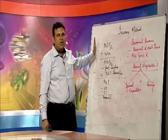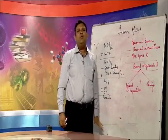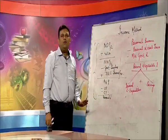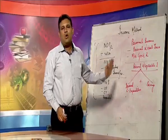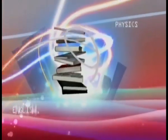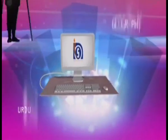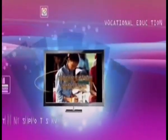We have started from domestic income and concluded with personal disposable income. The income method is now clear — the concepts and the table enable you to solve any type of numerical. Thank you very much.